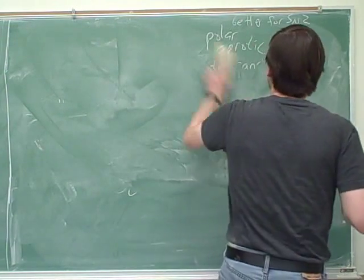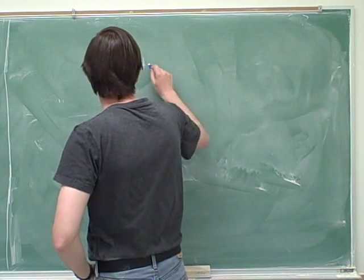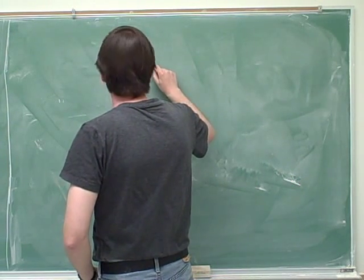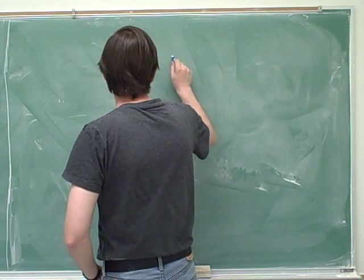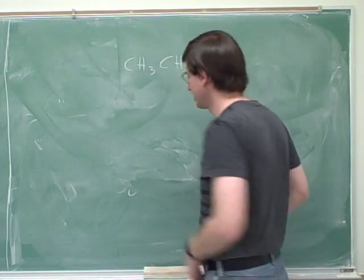So if we had something that literally looked, it was like CH3, 2, CHCl. Does that work? Like this? CH3 parentheses 2.